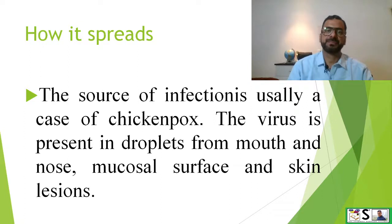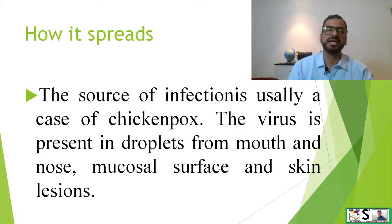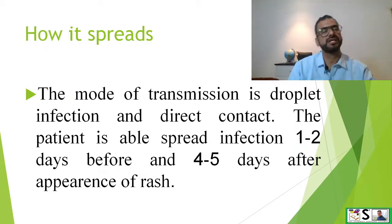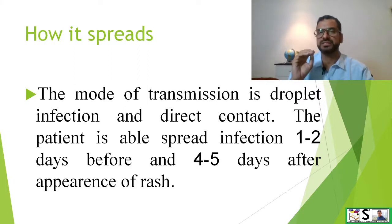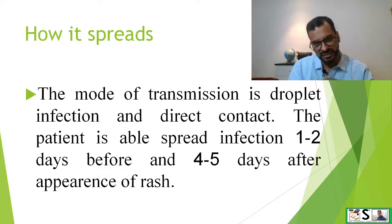How does it spread? The source of infection usually is a case, or we can say a patient, of chickenpox. The virus is present in the droplets from the mouth and nose, mucosal surfaces, and the skin lesions. The mode of transmission is droplet infection and direct contact. During sneezing, coughing, or even talking, the virus spreads with the droplets. Even the crusted skin lesions and rashes can transmit the virus by direct contact.